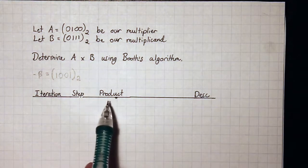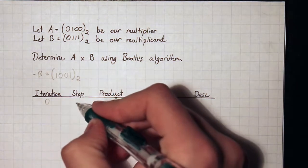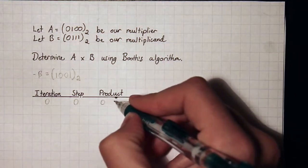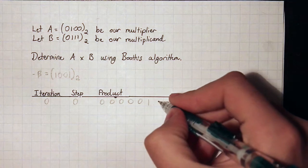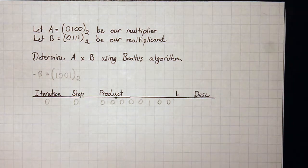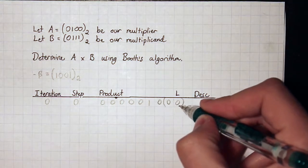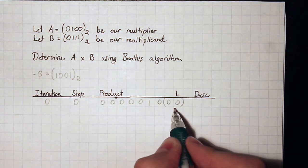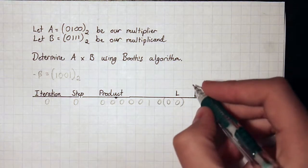So we have our table with iteration, step, product, and description. The first step of Booth's algorithm is the initialization step — that's iteration 0, step 0. We fill in the left half of our product register with zeros: 0000. Then we fill in the right half with our multiplier: 0100. The last bit is initialized with a 0. We group the rightmost bit and the last bit together, because we compare these two values: both 0s or both 1s means no action; a 1,0 sequence means subtraction; and a 0,1 sequence means addition. Description: initialize.